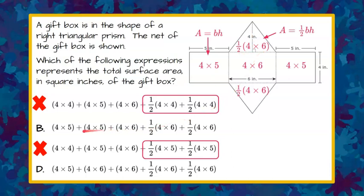Now let's look at B and D, because both have their triangles correct: one half four times six, and one half four times six. So now we're looking for the rectangles — four by five, four by six, and four by five. That's two four-by-fives and one four-by-six.